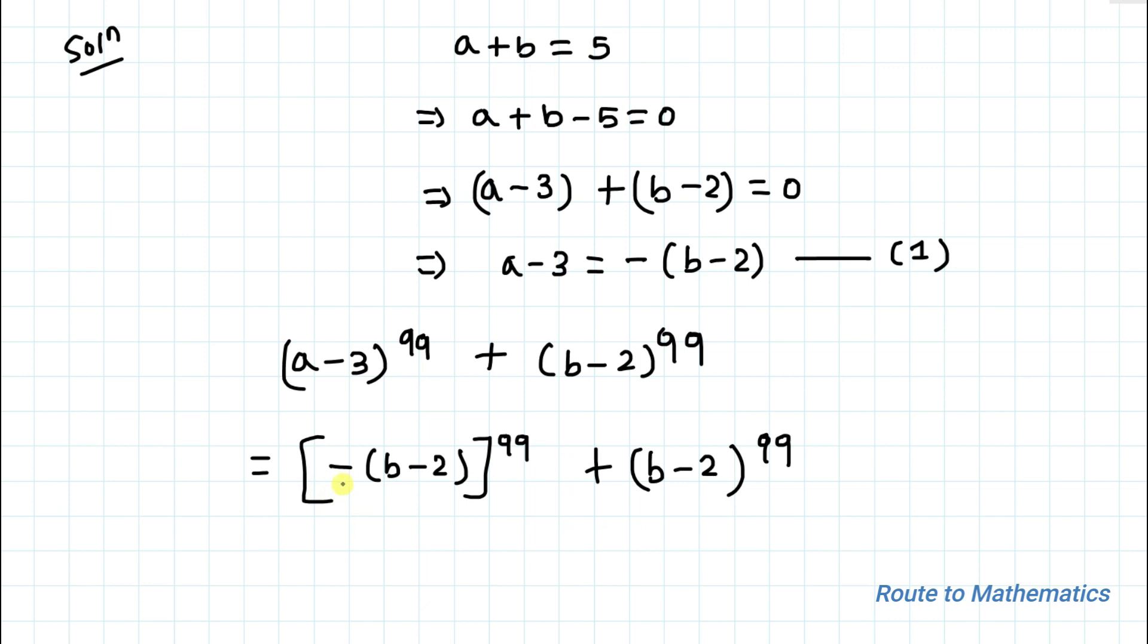Here we have a minus sign and our power is an odd number. Whenever the power is odd the minus sign will remain. So we have minus of b minus 2 whole to the power 99.